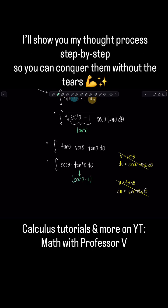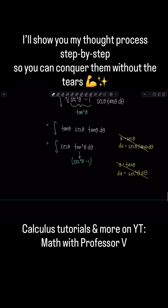And usually that will save the day. So then distribute now this secant that's sitting outside and we'll have integral secant cubed theta minus secant theta d theta.